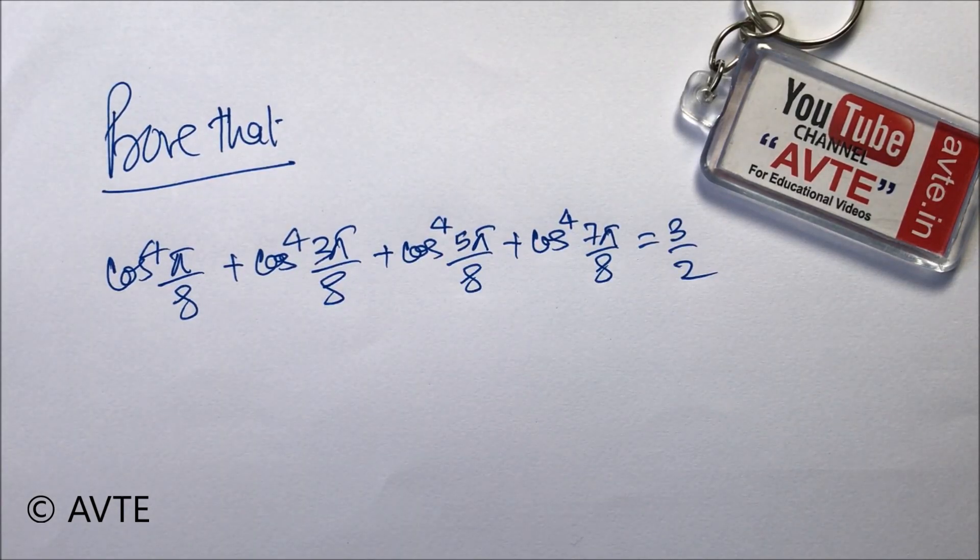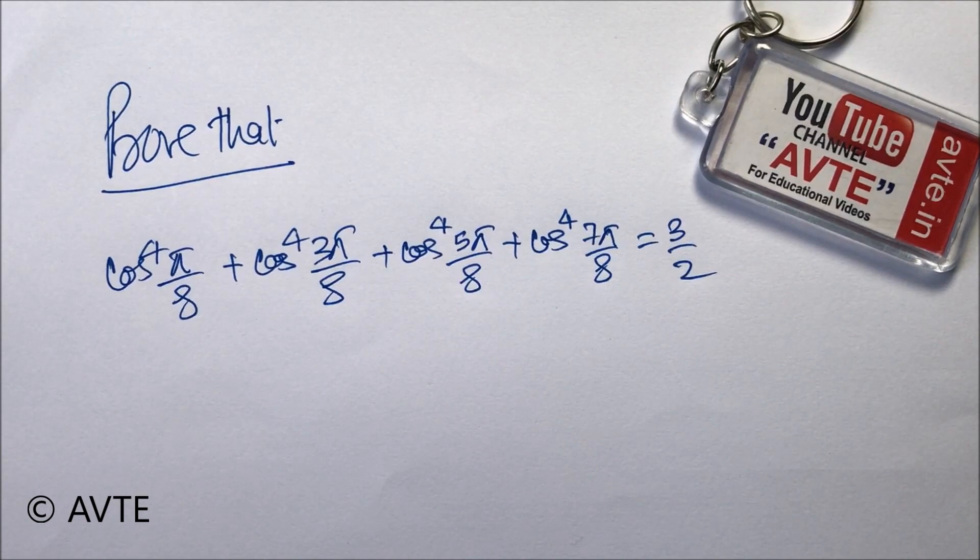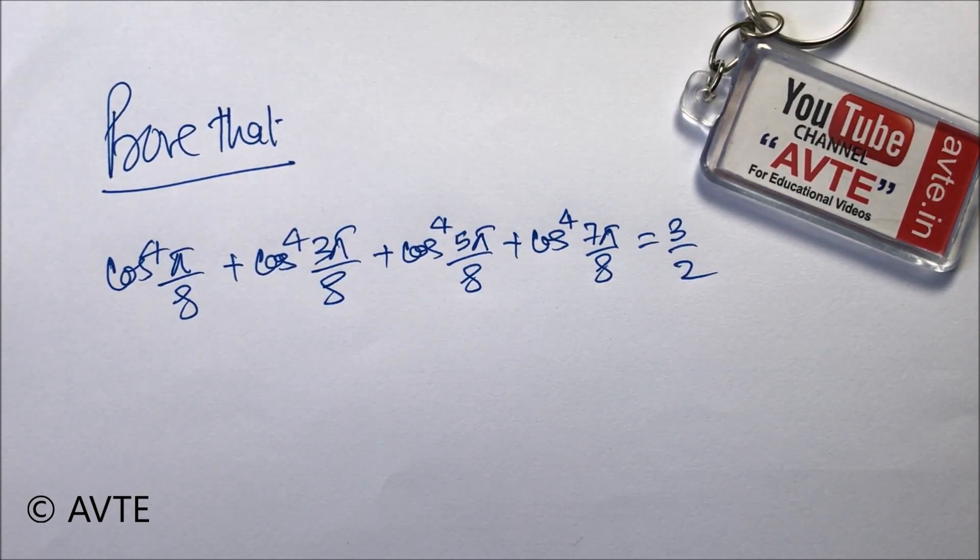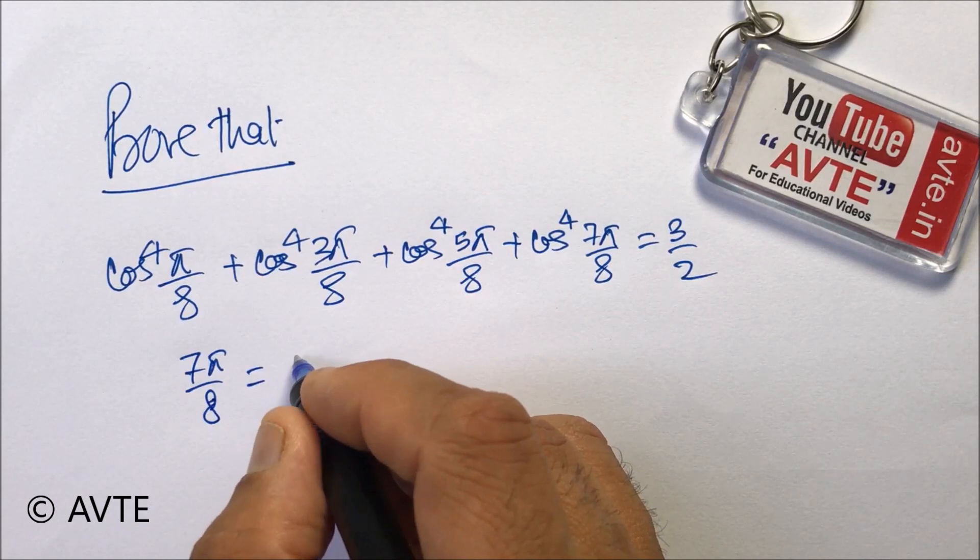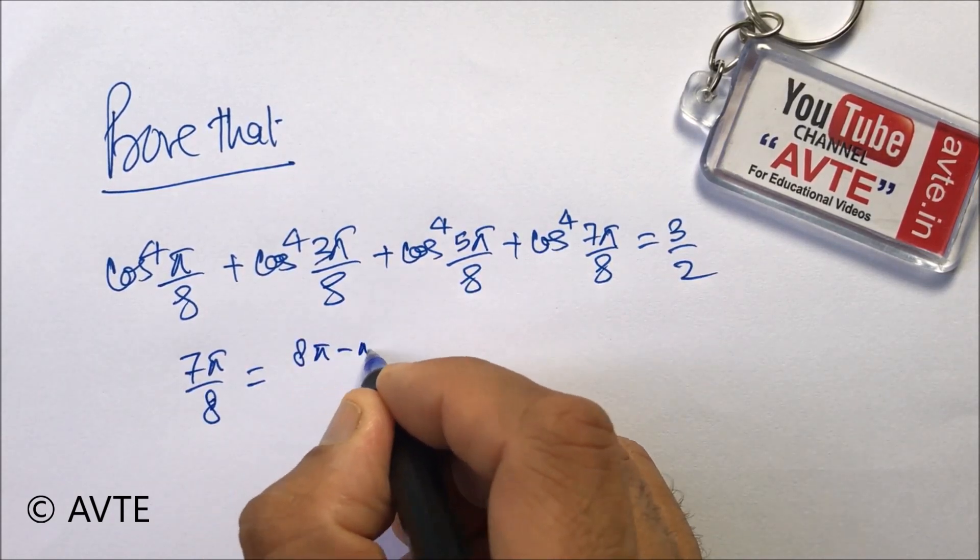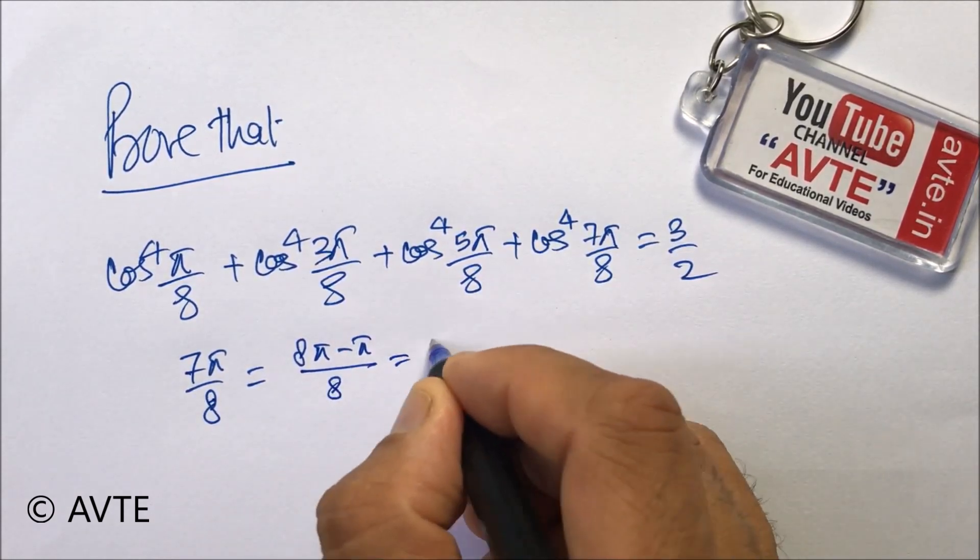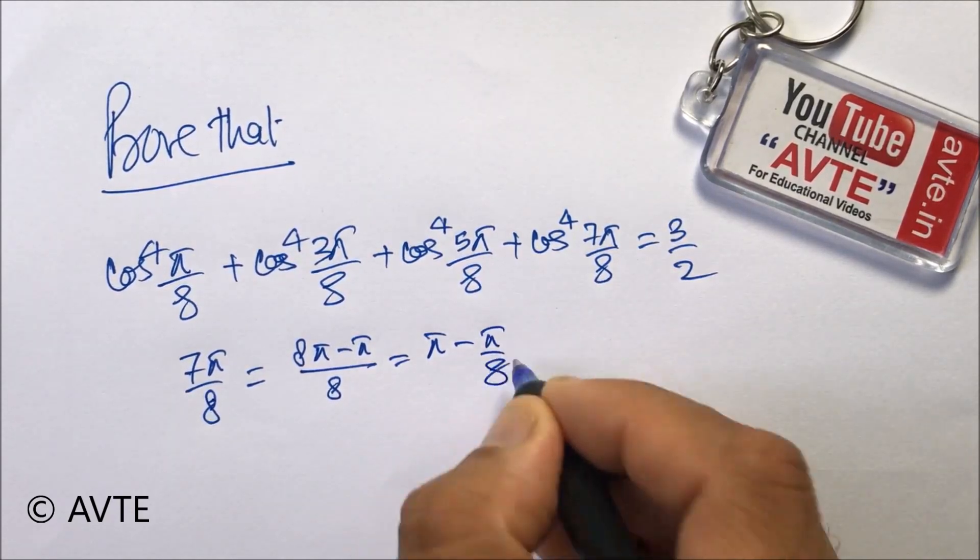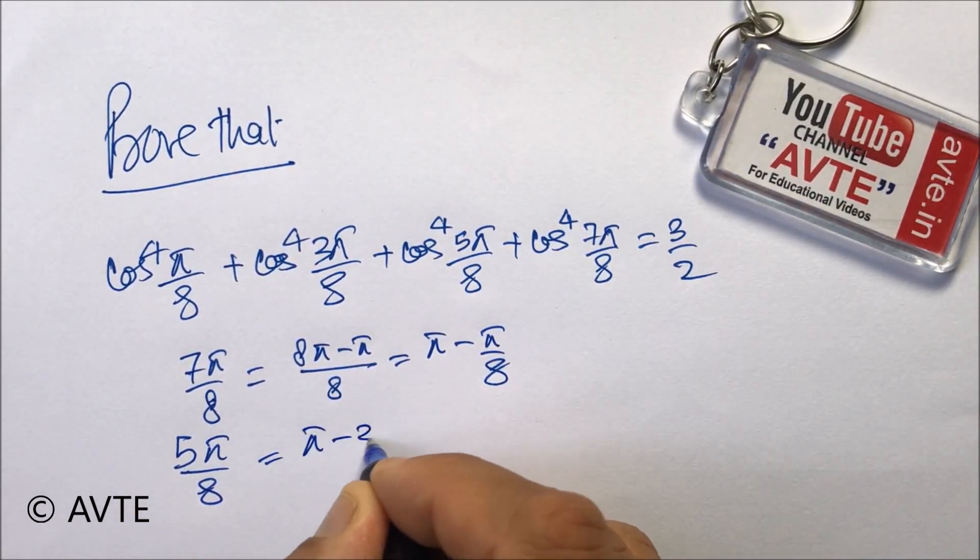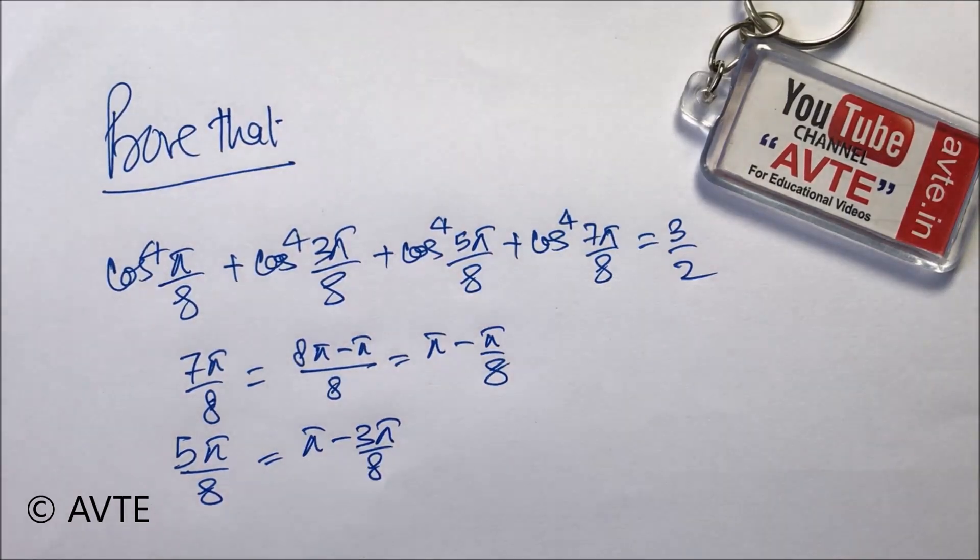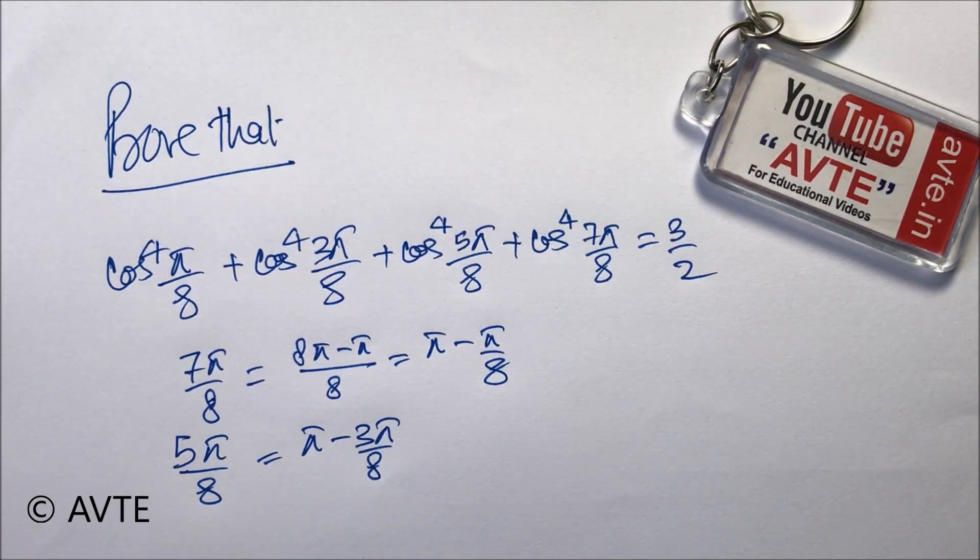We've already done a video on a similar question where the concept is converting bigger angles into smaller ones. We can write 7π/8 as π - π/8 and 5π/8 as π - 3π/8. Use this logic and solve, or we'll do it together.